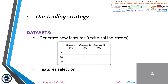We can generate more than 100 features, but generating a large number of technical indicators on different time frames could lead to the opposite effect on performance. That's why we decided to reduce the high dimensionality of the datasets by selecting the features which contribute most to the prediction.